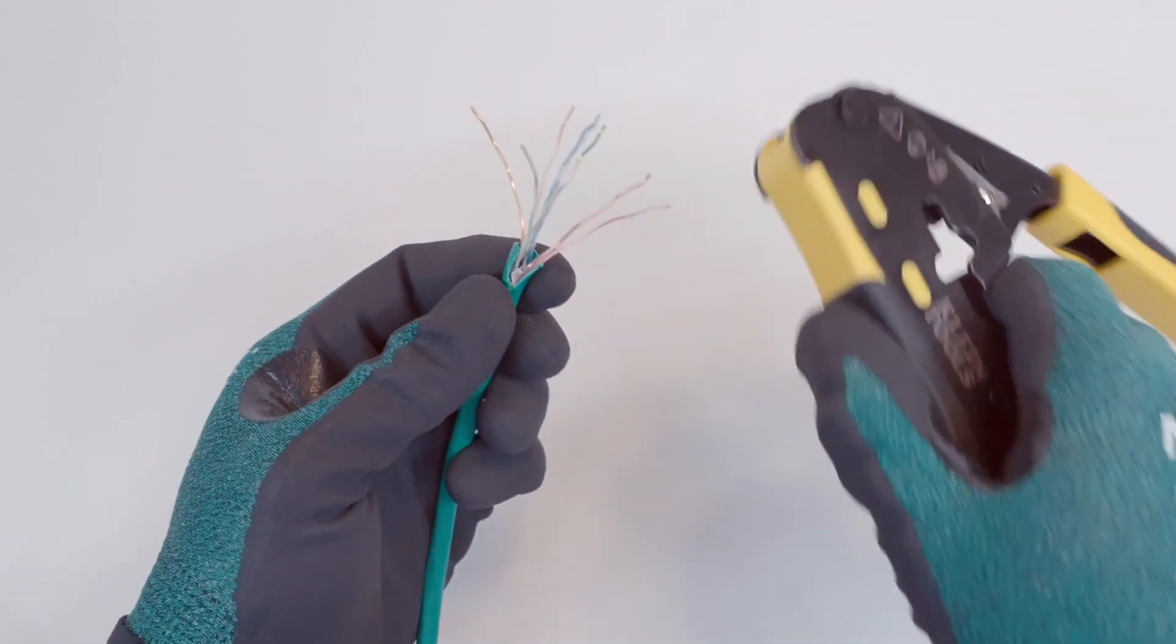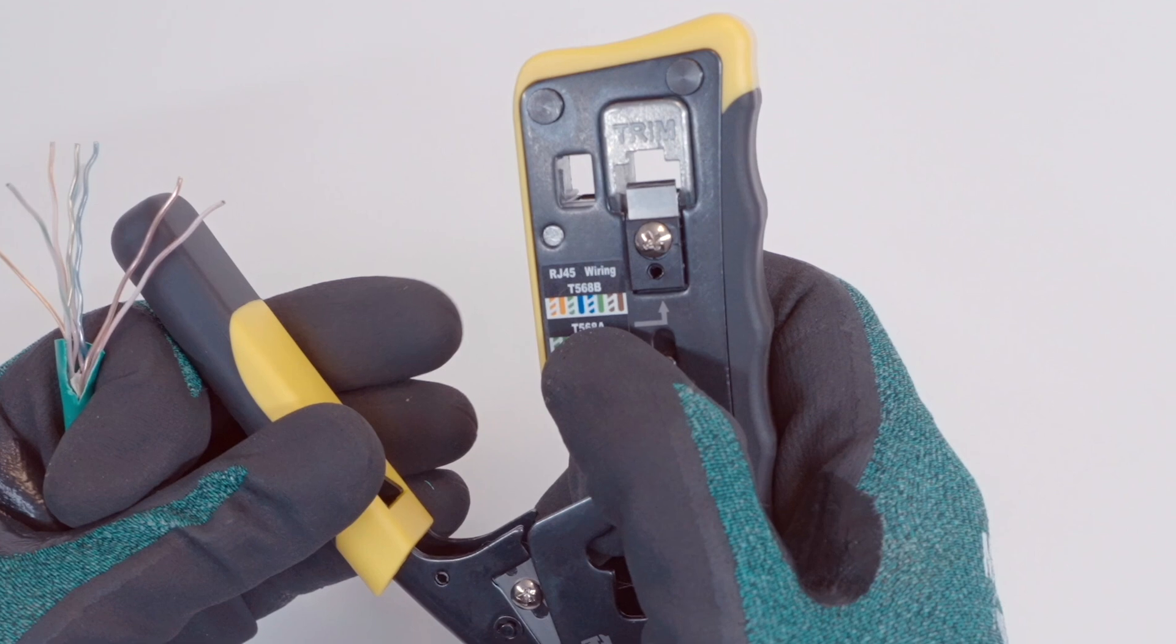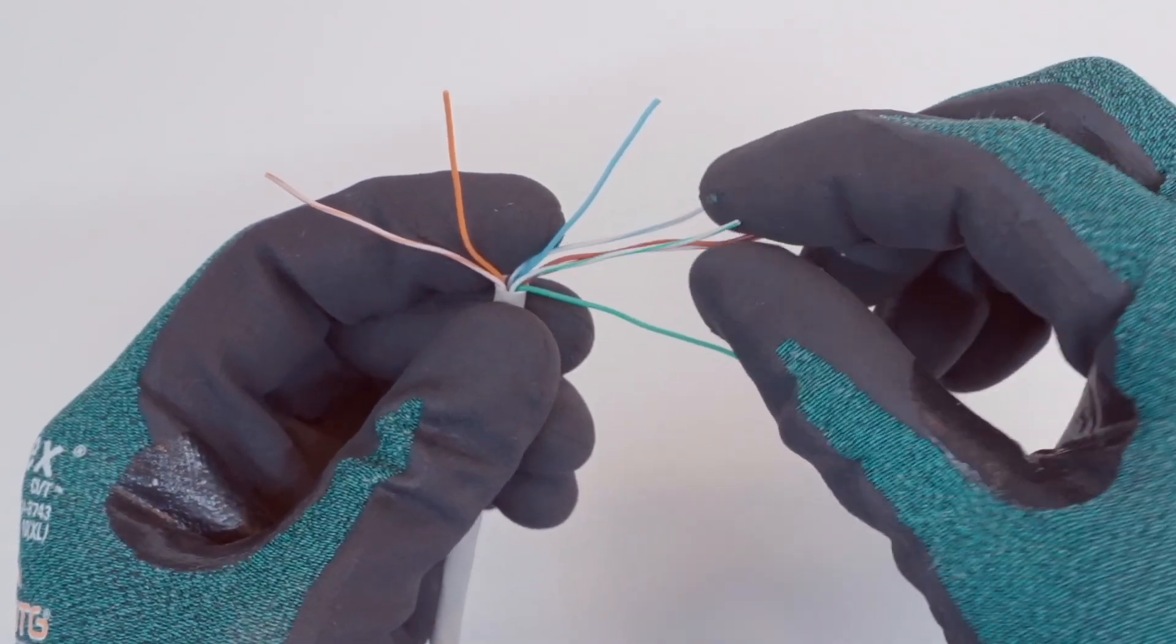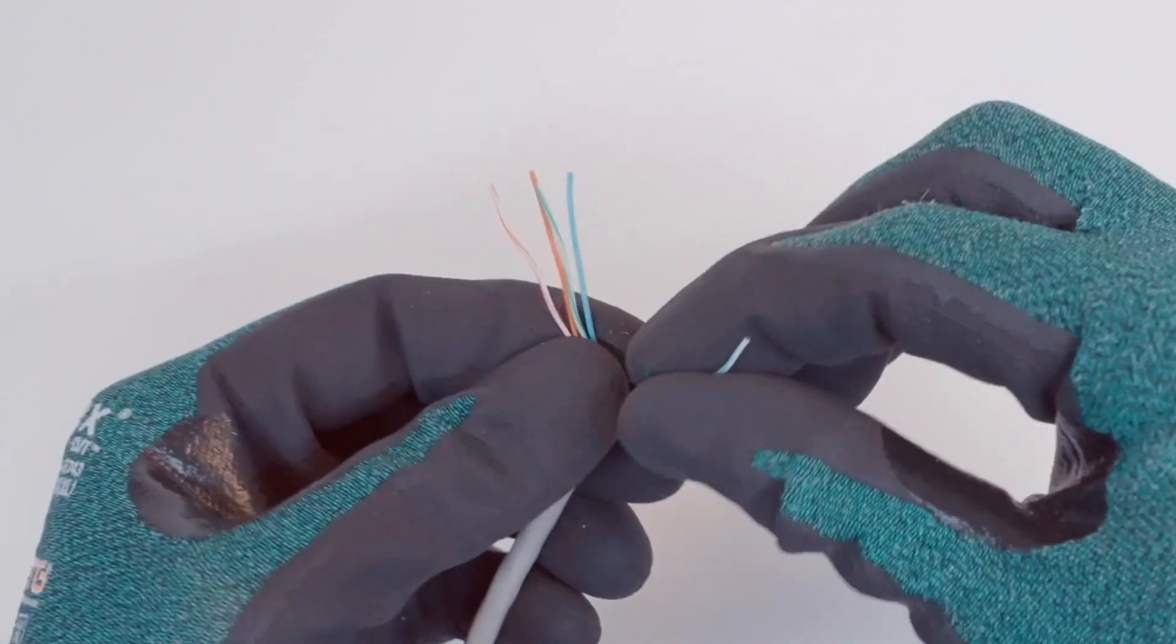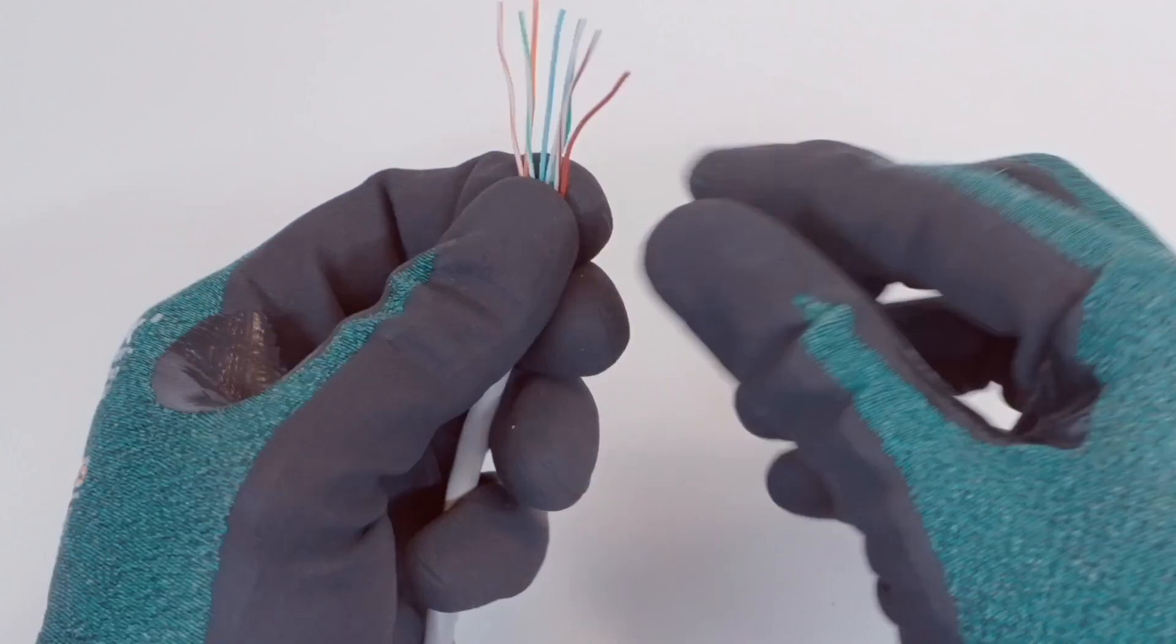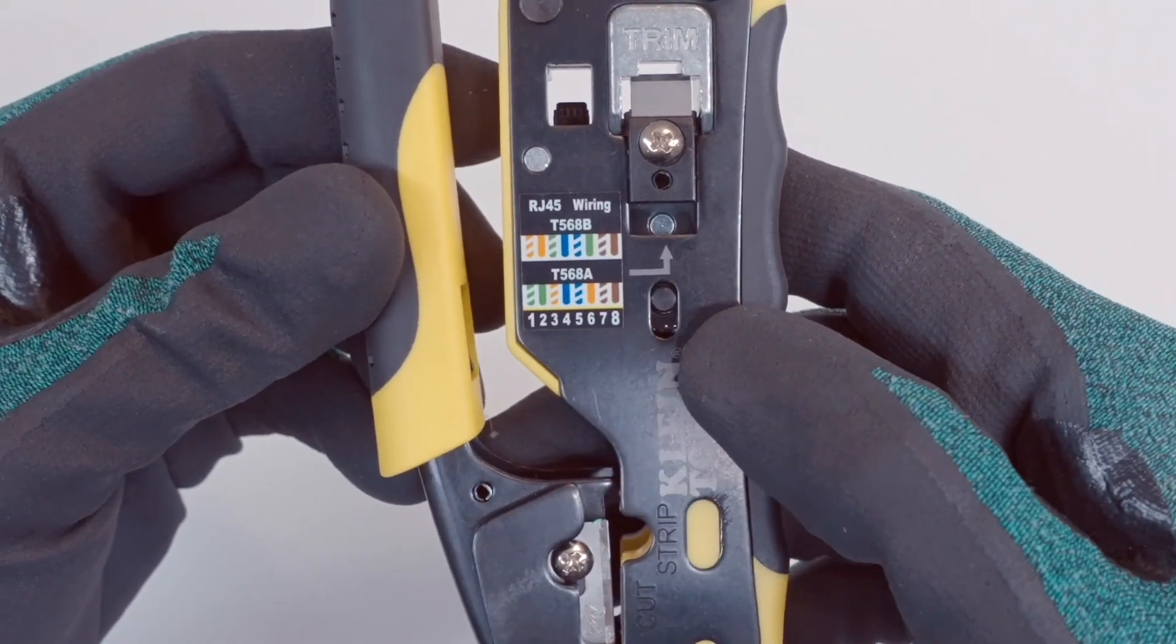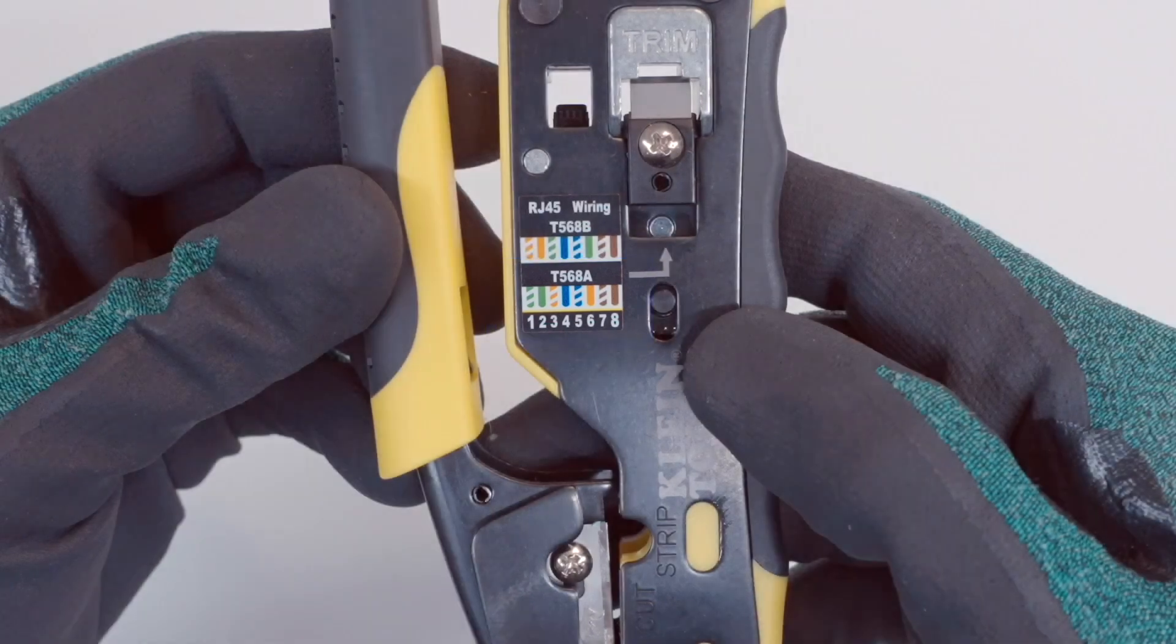The wires will now be arranged according to the T568B pinout. A diagram is present on the crimper for reference. From left to right, the colors are striped orange, solid orange, striped green, solid blue, striped blue, solid green, striped brown, and finally solid brown. Please note, some regions may utilize the T568A wiring configuration. Follow the appropriate standard for the region of installation.